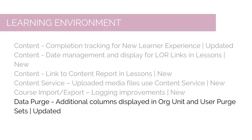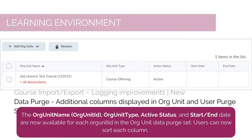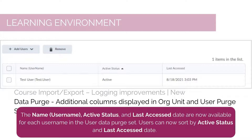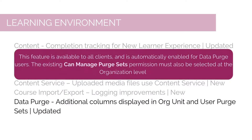When clients create a Data Purge Set for Users or Org Units, it was previously not possible to review data for potential issues before performing the archive or purge. The Org Unit Name, Org Unit Type, Active Status, and Start and End Date are now available for each Org Unit ID in the Org Unit Data Purge Set, and users can sort each column. The Name, Username, Active Status, and Last Access Date are now available for each Username in the User Data Purge Set, with sorting by Active Status and Last Access Date. Note that if descendants of an Org Unit are chosen, the Child Org Units do not display. This feature is available to all clients and automatically enabled for Data Purge users; the existing Can Manage Purge Sets permission must also be selected at the organization level.